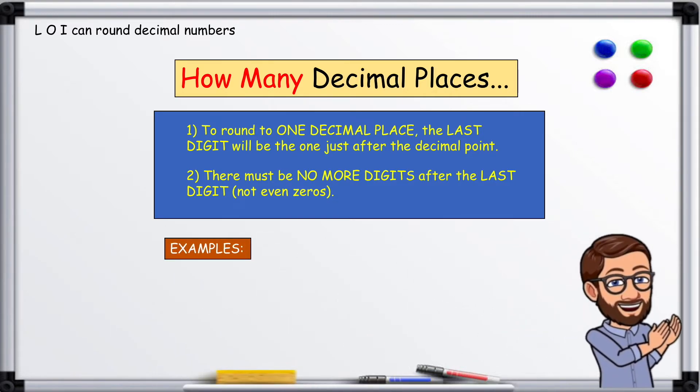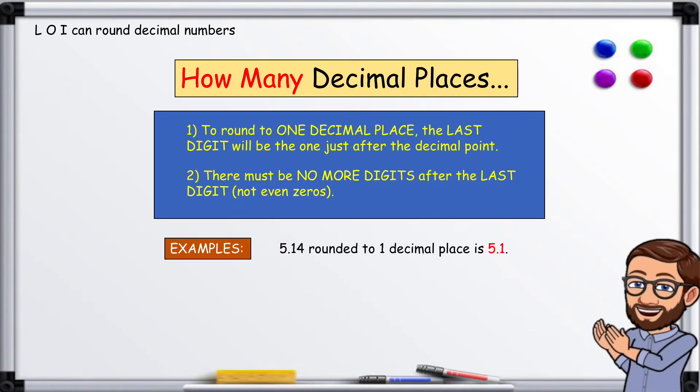Examples. 5.14 rounded to one decimal place is 5.1. 2.37 rounded to one decimal place is 2.4.